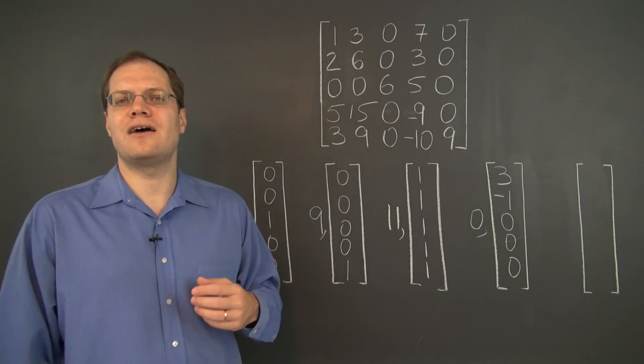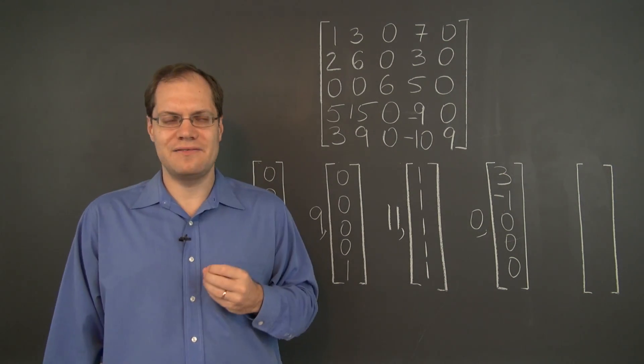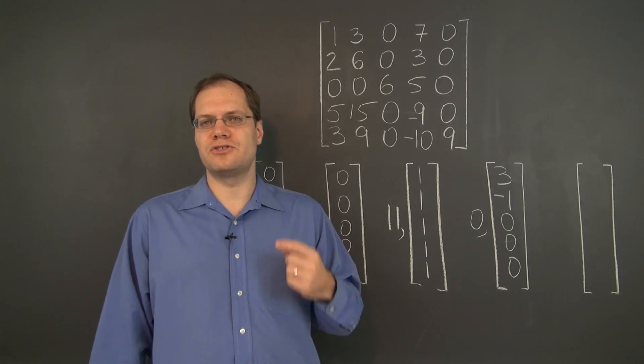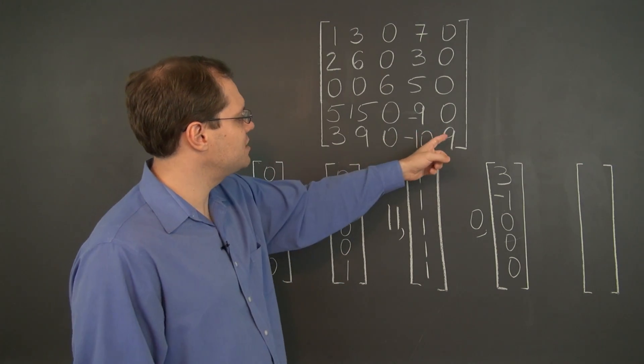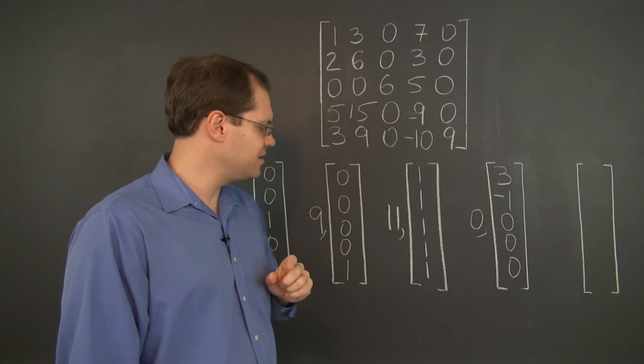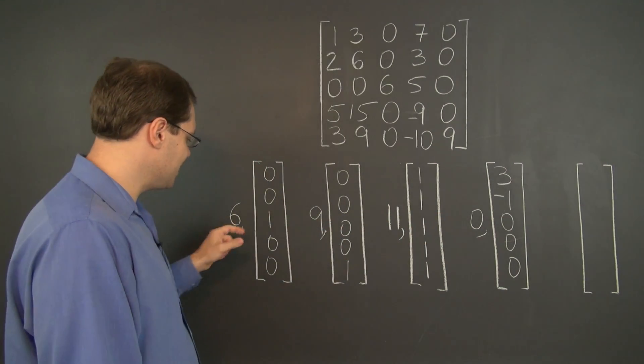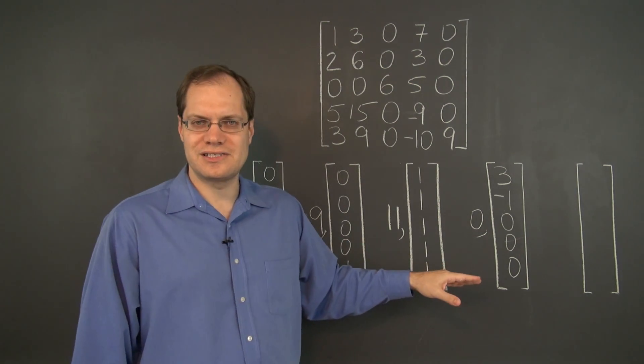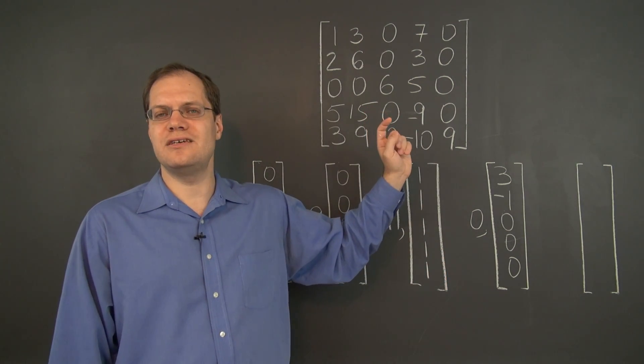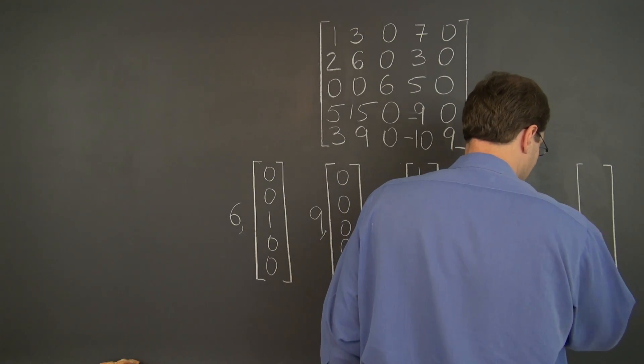So now that we have all but one of the eigenvalues, the remaining eigenvalue will of course come from the trace and the trace of this matrix is 13. The eigenvalues that we have already identified add up to 26. So they add up to 26, the trace is 13, so the remaining eigenvalue must be negative 13.